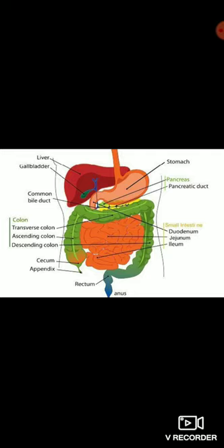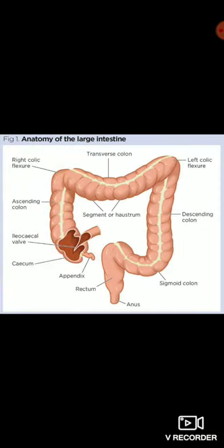The next part of the digestive system is called the large intestine. The large intestine is wider than the small intestine. It is about 1.5 to 1.8 meters long and 6 cm in diameter. It is looped outside the small intestine in the abdominal and pelvic cavity, and is divided into cecum, colon, and rectum.